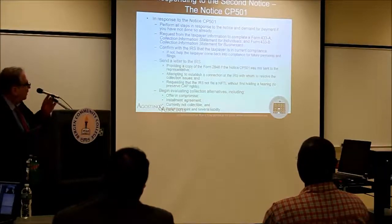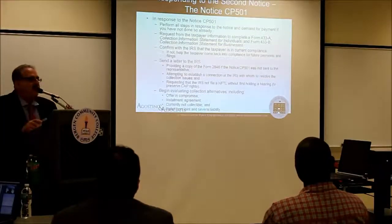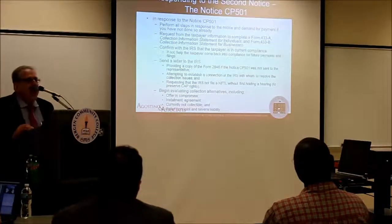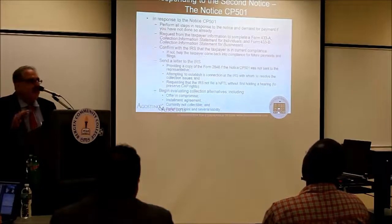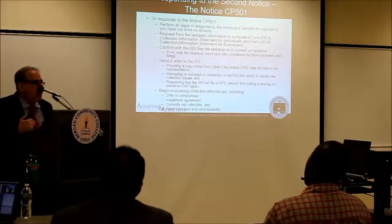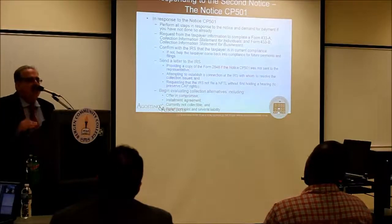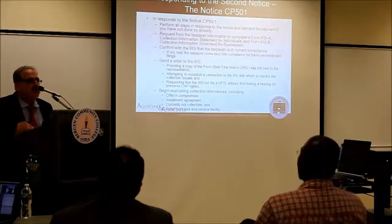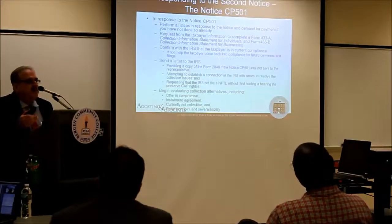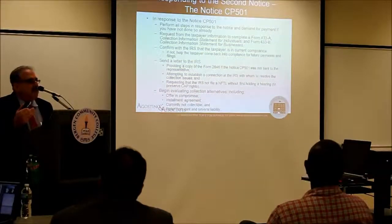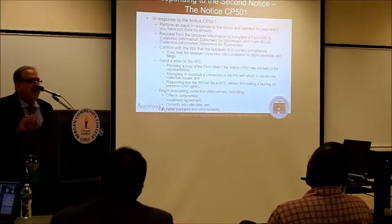Back to the letter filing and the 2848 — liens are fought in two different ways: pre-lien filing and post-lien filing CDP. Pre-lien filing: before the IRS files the notice of federal tax lien, if you exercise your CAP rights — your pre-lien filing rights — you get the right to a conference with the revenue officer and their group manager within 48 hours, then an appeal to the Office of Appeals on a rocket docket in five days.